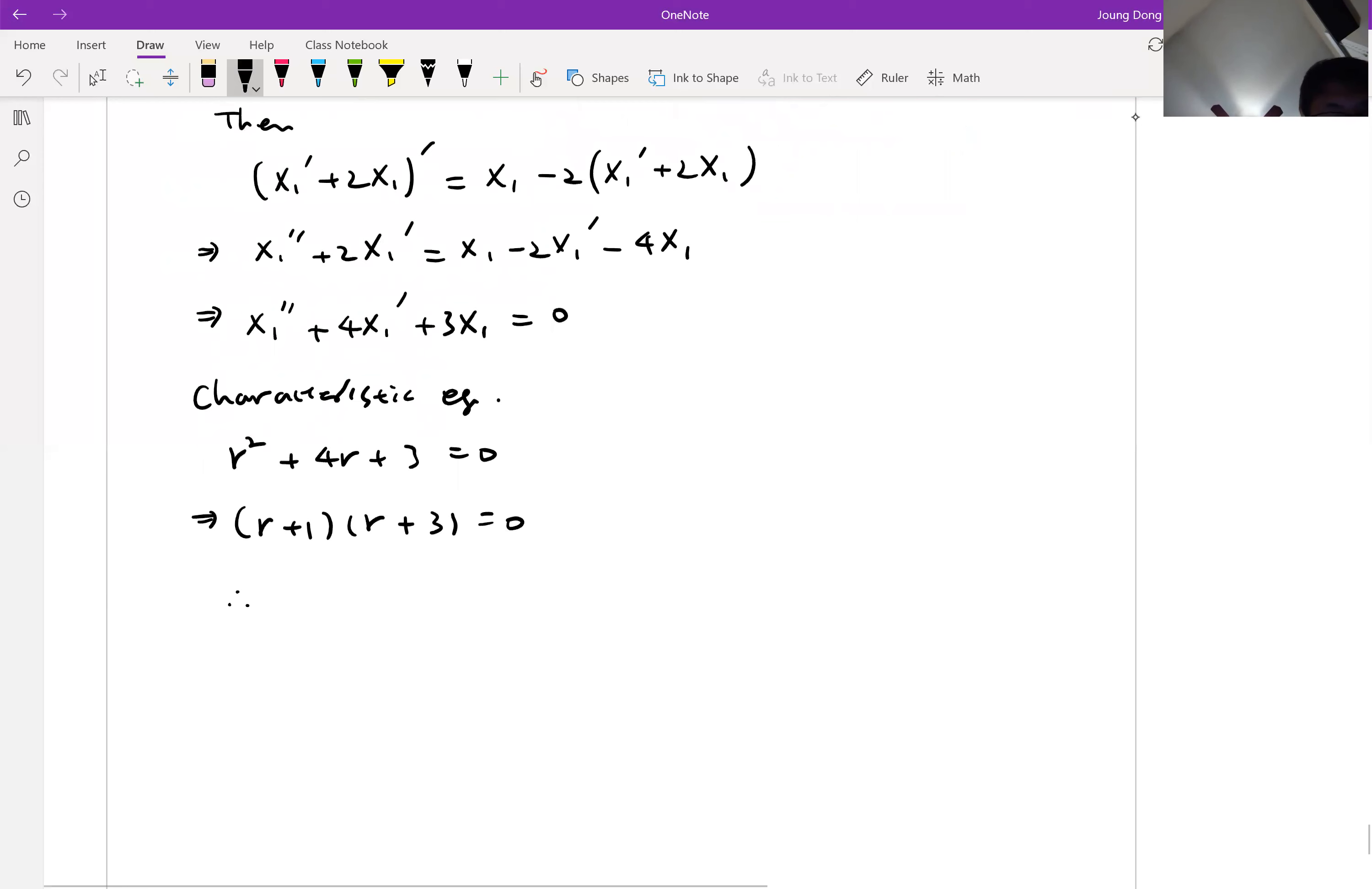Then I can say there are two real numbers. So for this equation, then like from this guy, I can say x1(t), which is homogeneous equation, is c1 e to the minus t plus c2 e to the minus 3t. Is that okay?